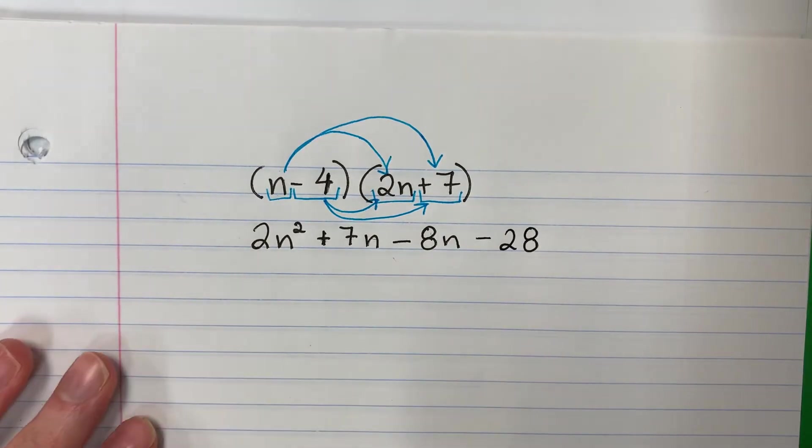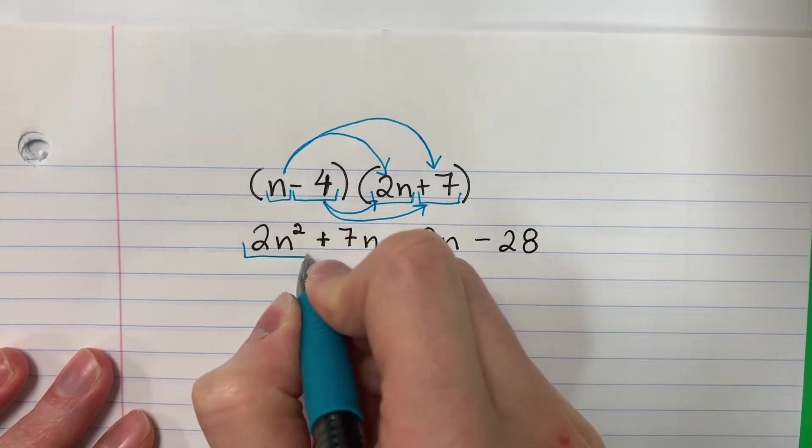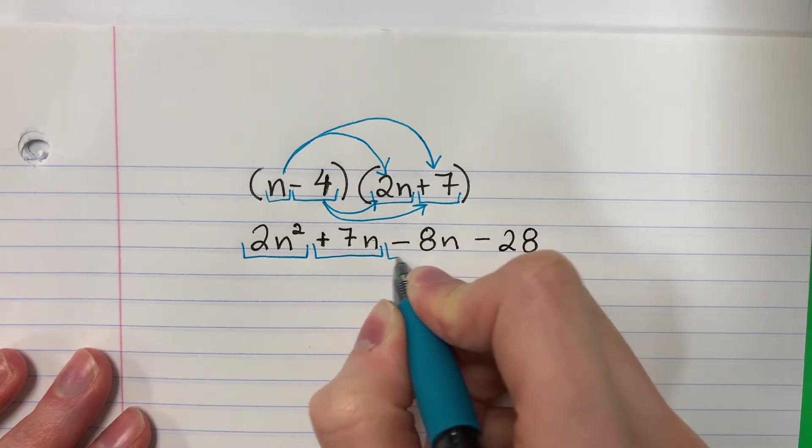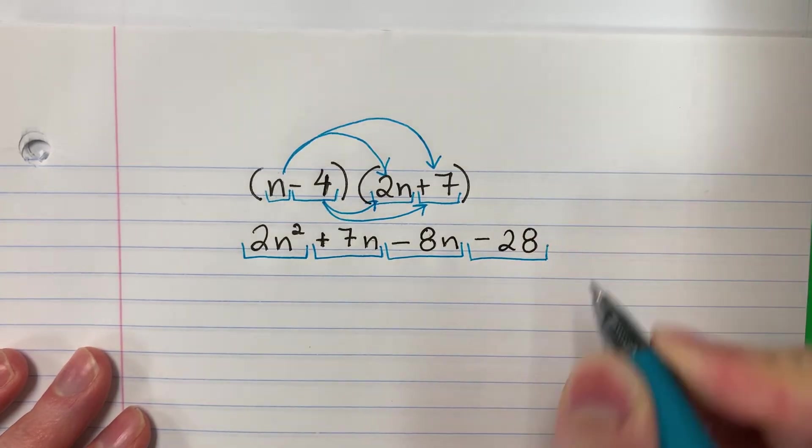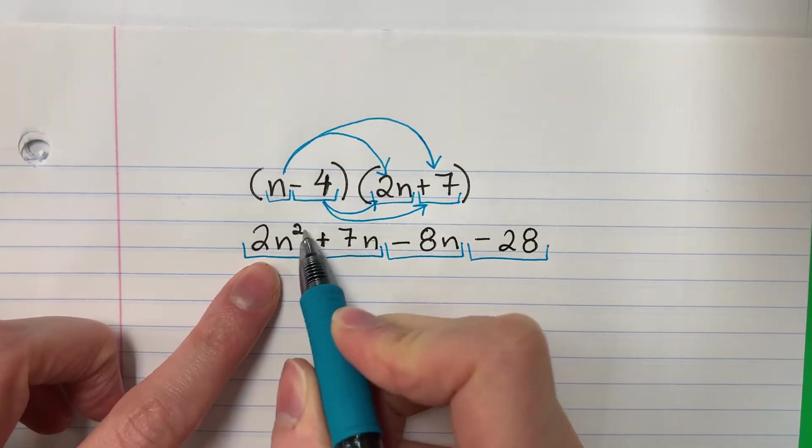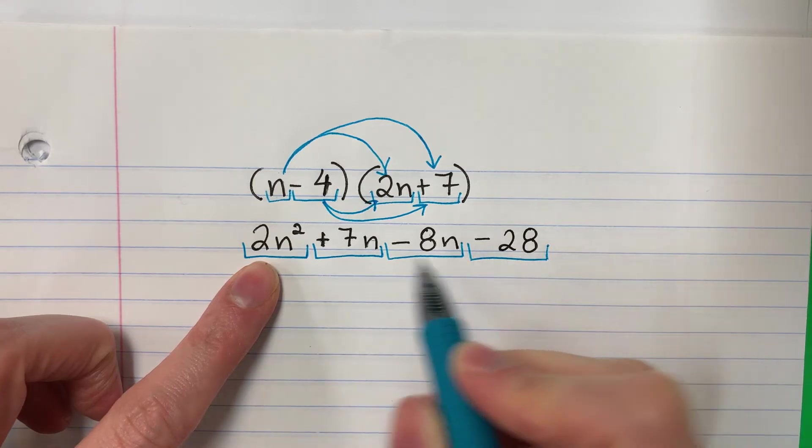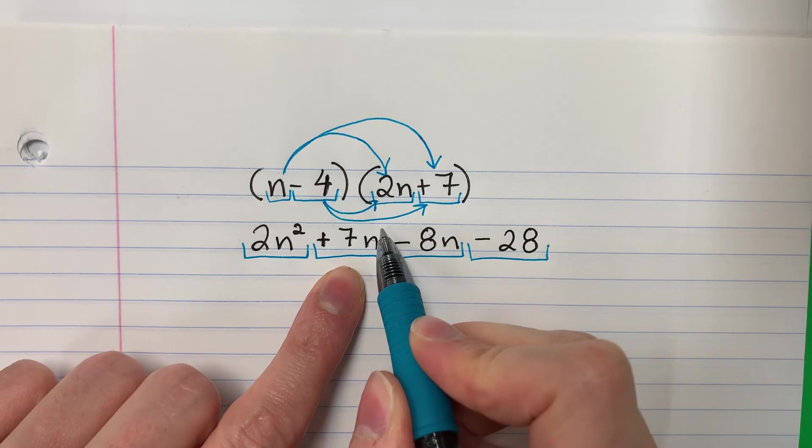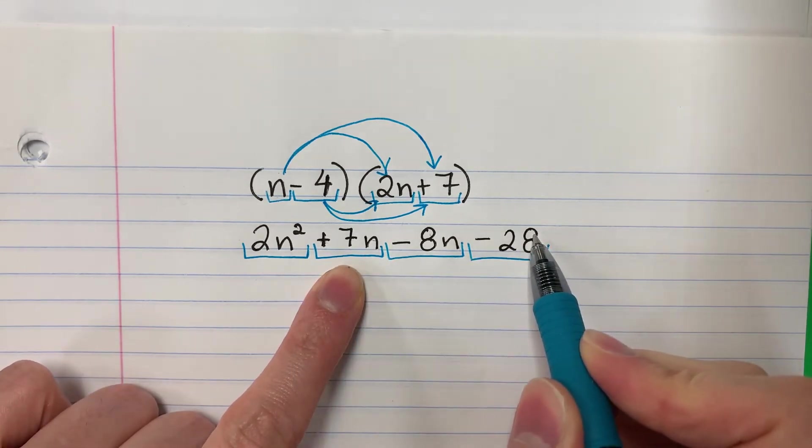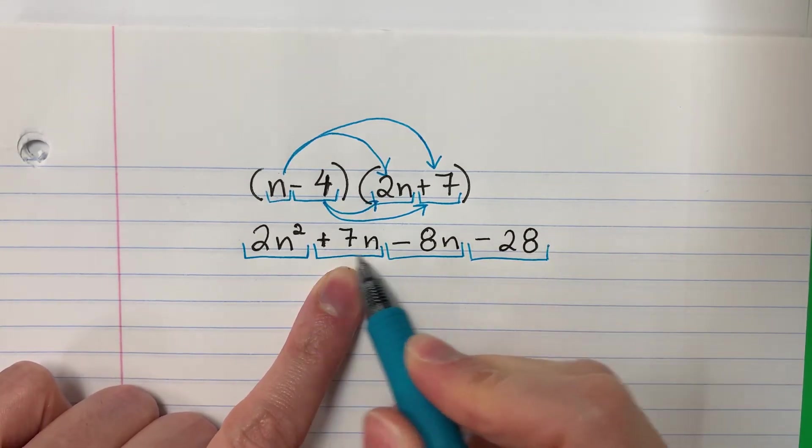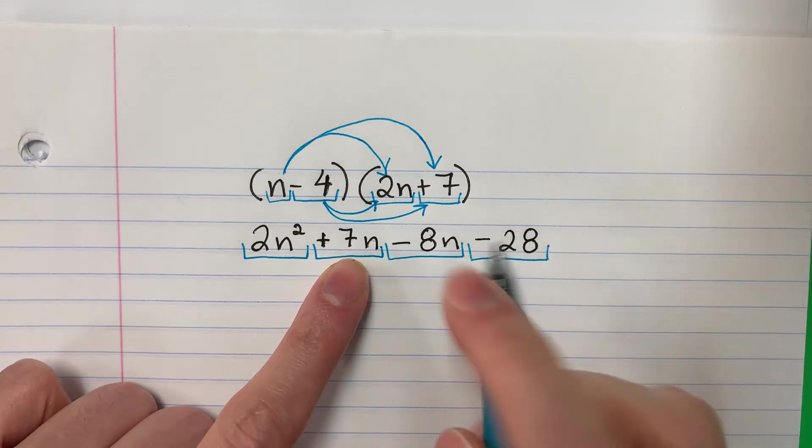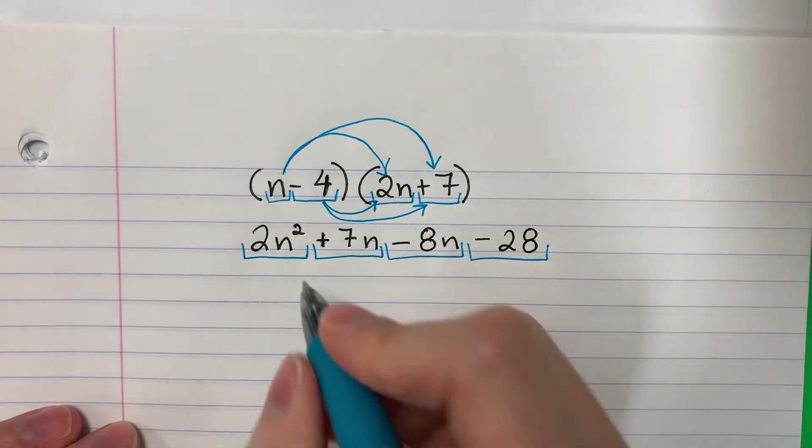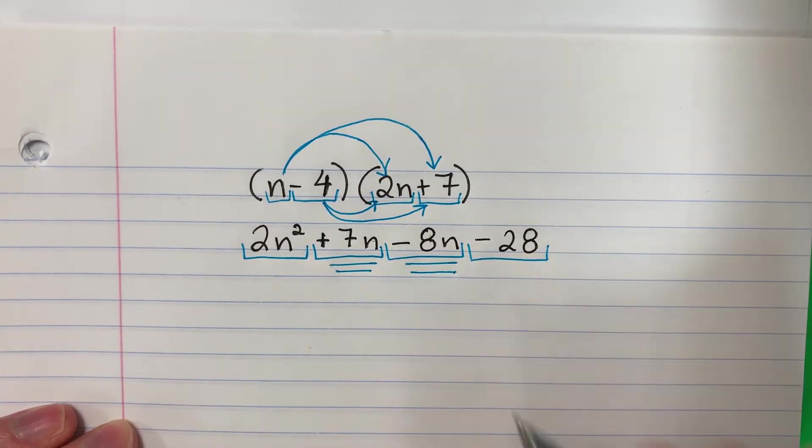All right, how many parts here? Cuántas partes? I have 1, 2, 3, 4. This is n squared, n cuadrado. Is there another n squared? Hay otra n cuadrado? No. This is n, no exponent. Is there another n, no exponent? Este es n sin exponente. Hay otra n sin exponente? Yes, sí. These two. Estos. So these, I'm going to go ahead and combine. Voy a combinar.